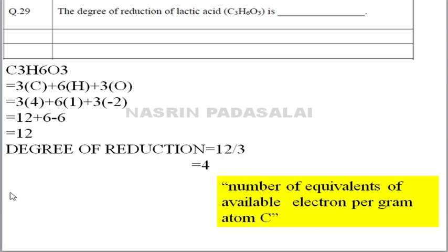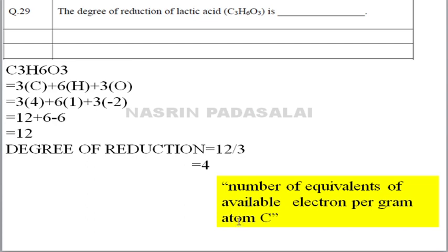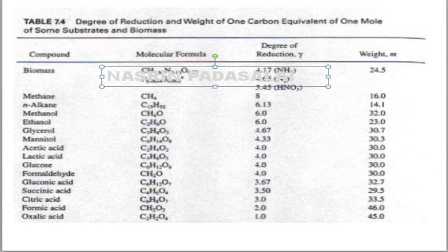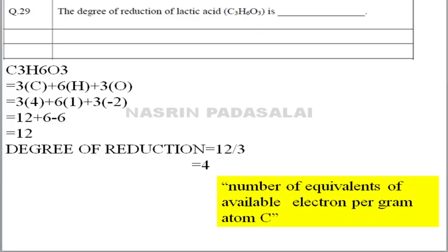The number of equivalents of lactic acid is 12. But this is not the degree of reduction yet. To find the degree of reduction, divide by the number of gram atoms of carbon: 12 / 3 = 4. Try to remember the degree of reduction for common compounds like methane, n-alkane, methanol, and ethanol to save time in the GATE exam. The degree of reduction of lactic acid is 4.